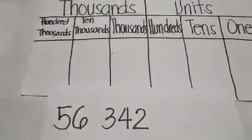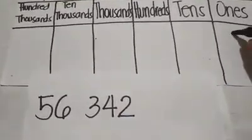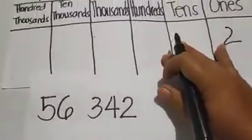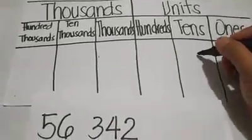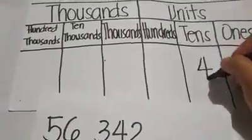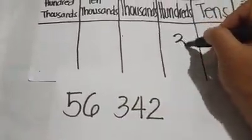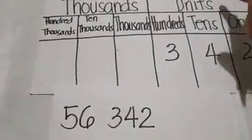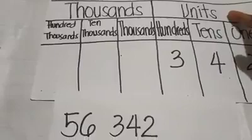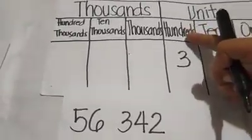Let's write them in their places. 2 will be placed here in the 1s. Then 4 will be placed in the 10s. 3 will be placed in the 100s. So 3, 4, and 2 belongs to group of units, and their places are 1s, 10s, and 100s.